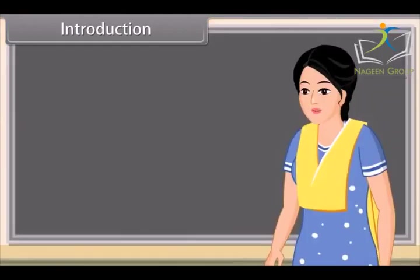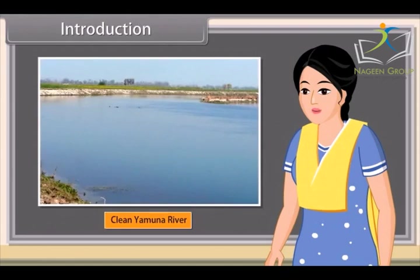Yes, Gaurav, you are absolutely correct. Yamuna River is now one of the most polluted rivers of India. But it was clean before. Have a look — our activities have made it polluted and it appears dirty.